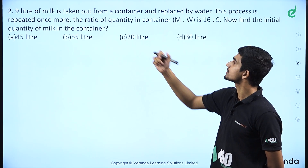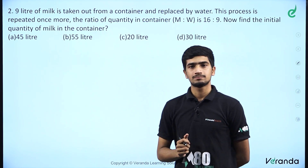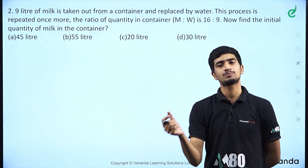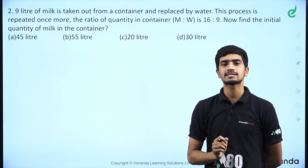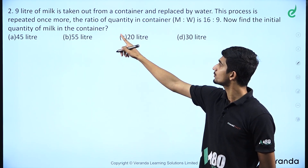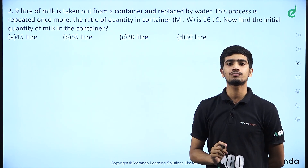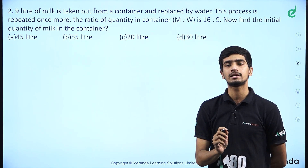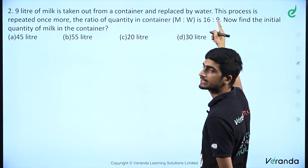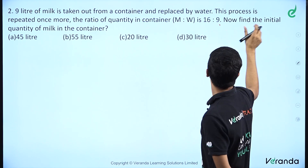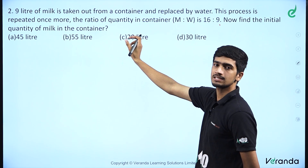Next question: 9 liters of milk is taken out from a container and replaced by water. The process is repeated once more, so n equals 2. The ratio of the quantity of milk to water in the container at the end is 16 to 9. We need to find the initial quantity of milk.